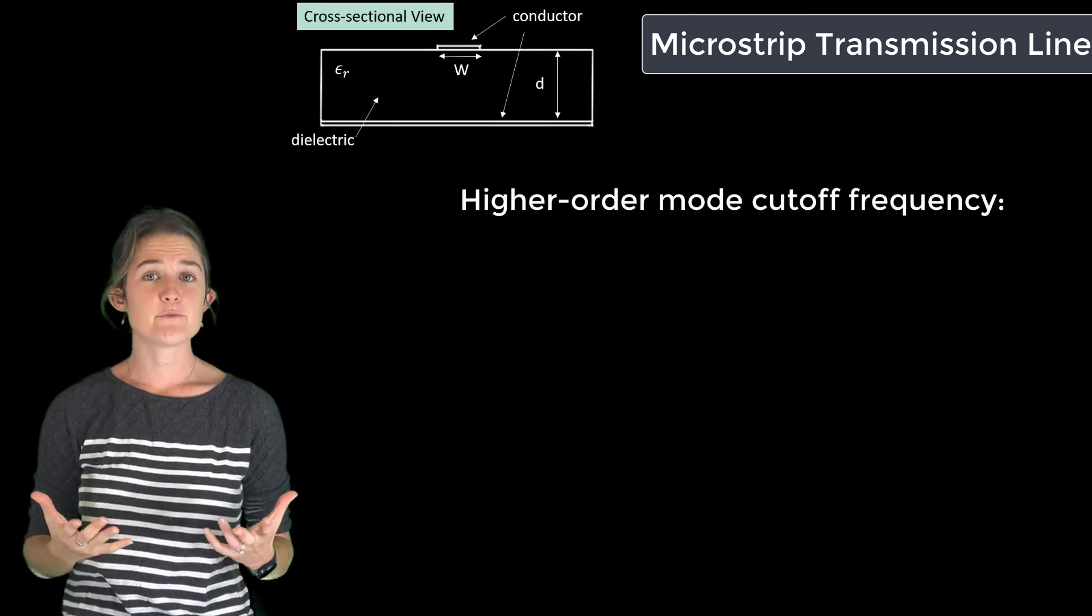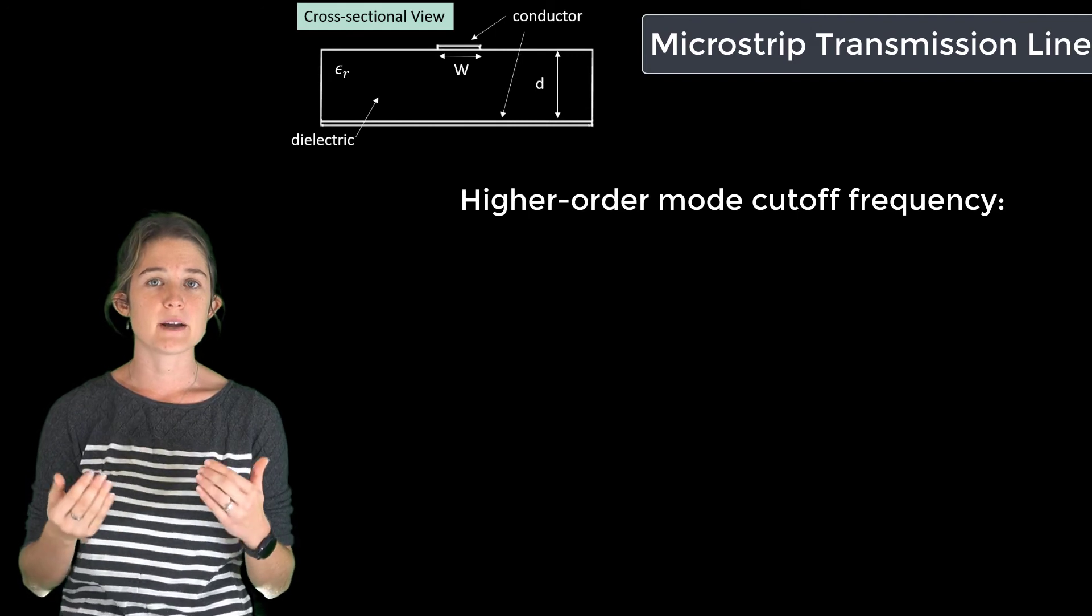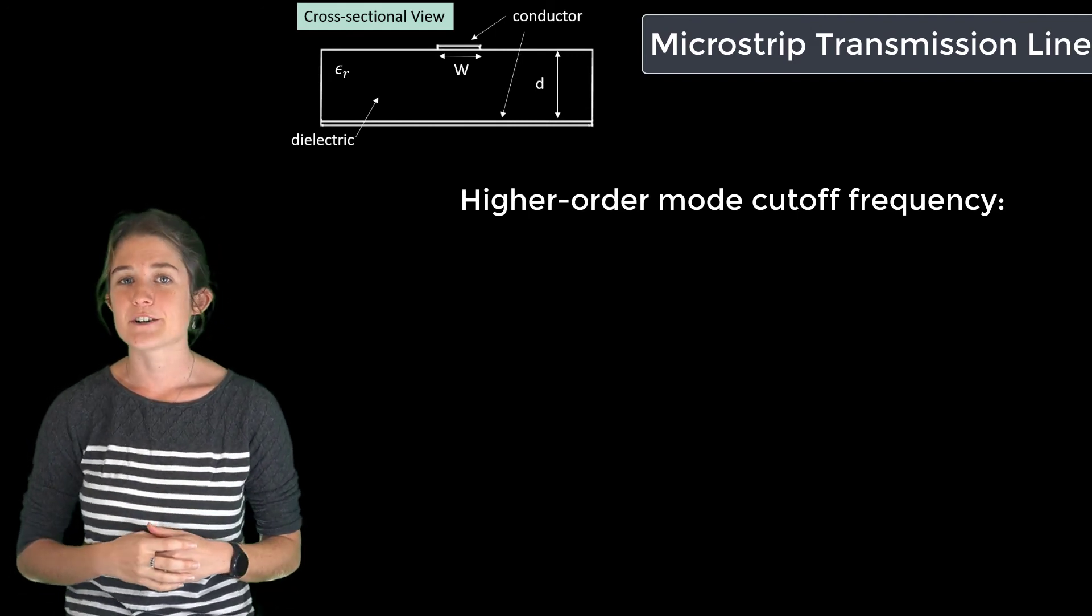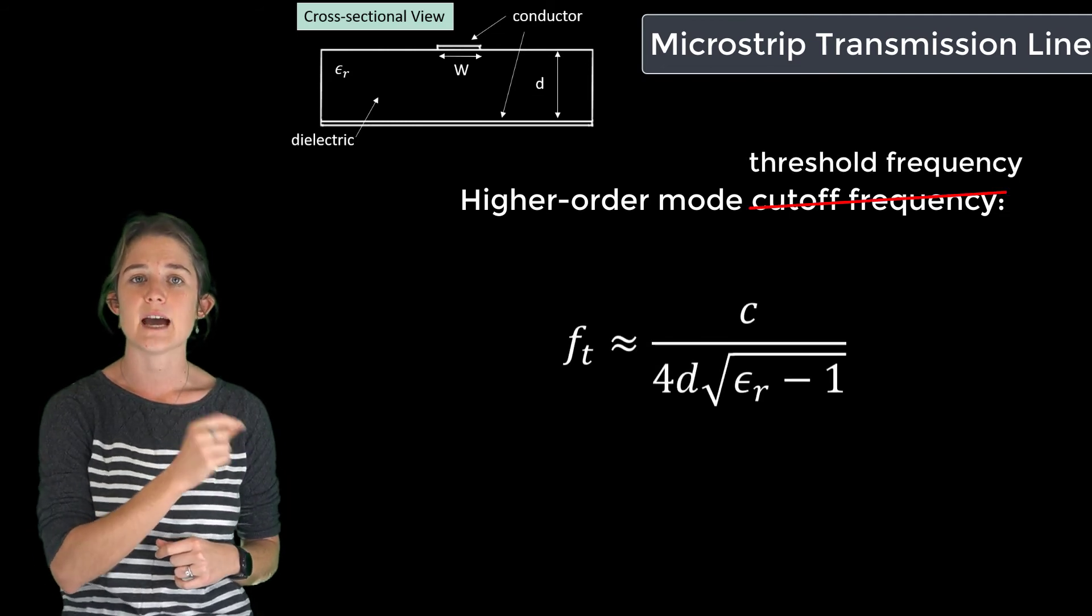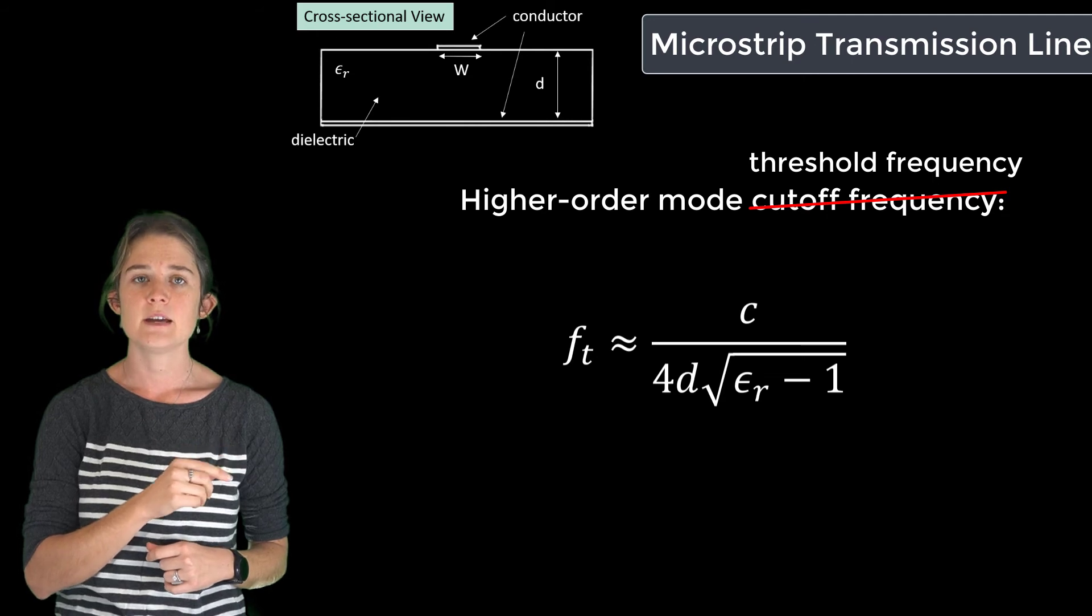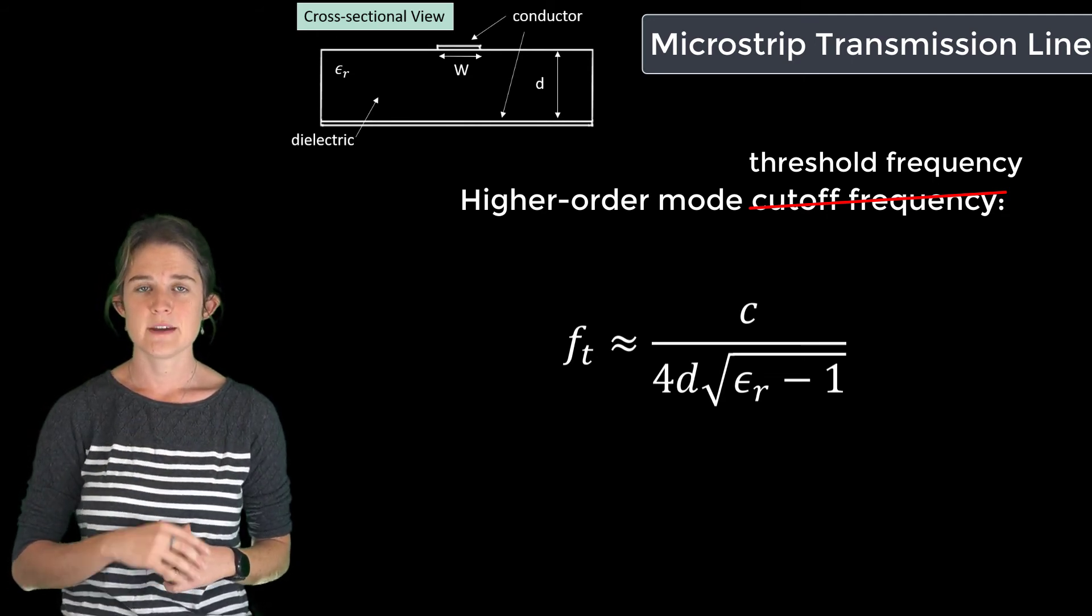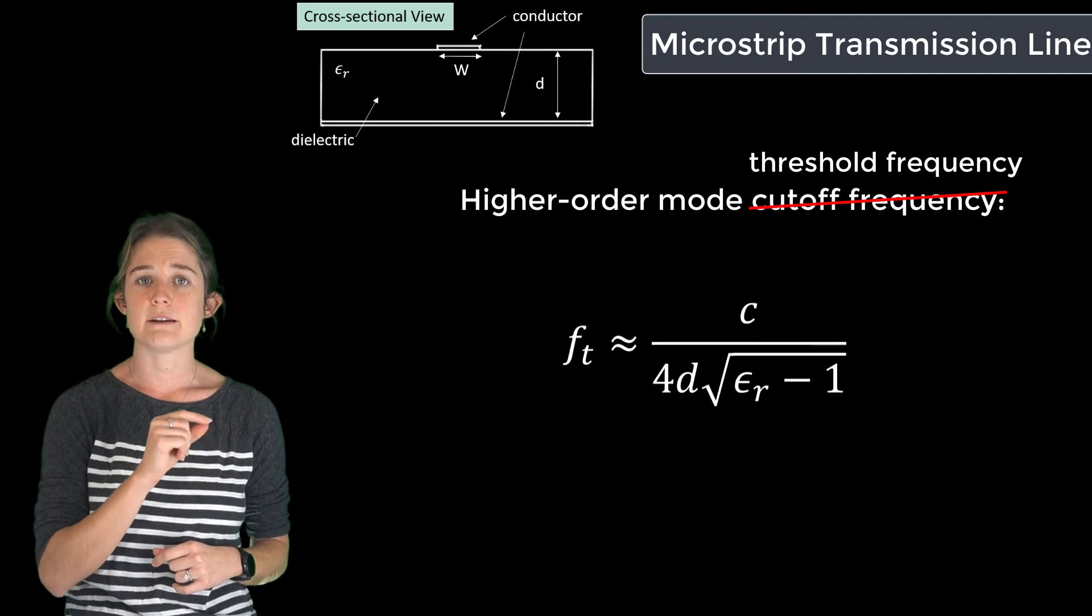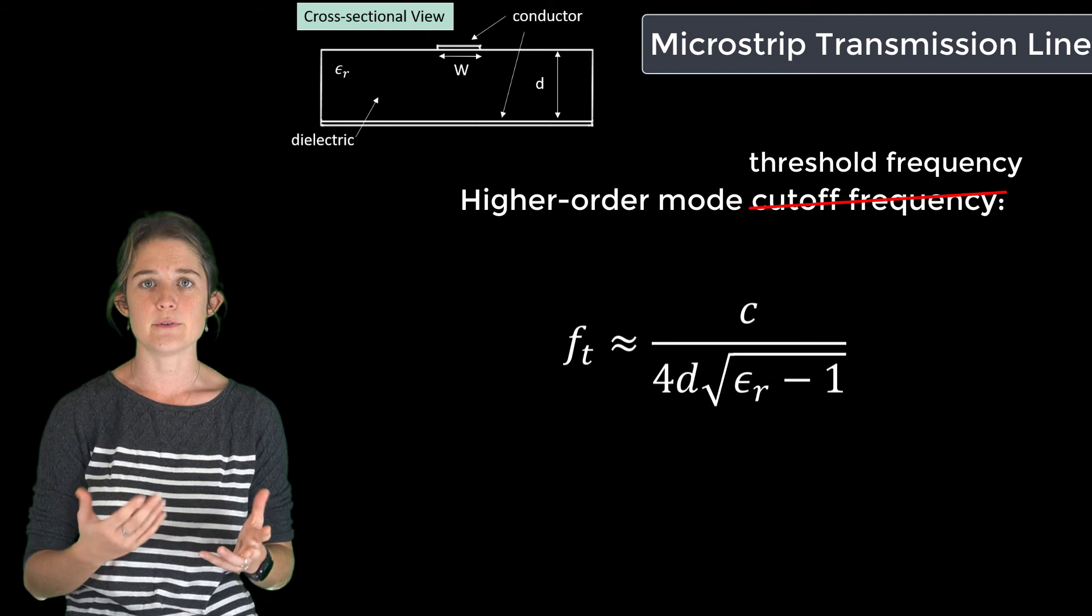Since the definition of modes on a microstrip line is a little fuzzy, it's harder to come up with a firm cutoff for the first higher order mode. However, a good rule of thumb approximation is this one. The threshold frequency ft is approximately equal to C, the speed of light in a vacuum, divided by 4d square root of epsilon r minus 1. This is the threshold frequency of the microstrip, and it is recommended that you operate a microstrip line below this frequency.